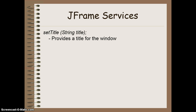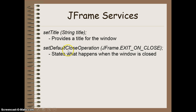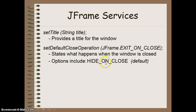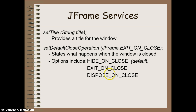Here are some of the services available to any JFrame we create. The first is setTitle, which allows you to put a title into the window. setDefaultCloseOperation requires you to type JFrame dot and then pick one of four options: the initial default is Hide on Close; you could also have Exit on Close, which terminates the whole program when you click the X; Dispose on Close, which gets rid of that window while the rest of the program keeps running; and Do Nothing on Close, which makes that X do nothing.